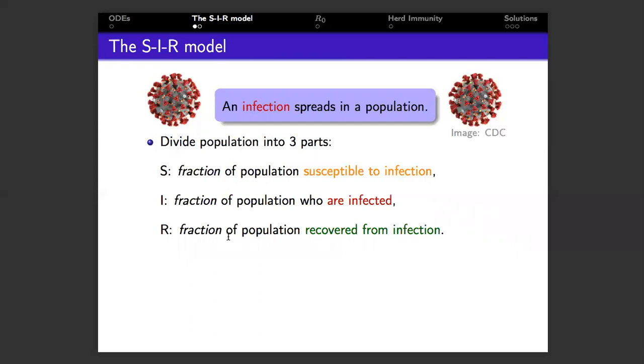Now every member of the population is in either S or I or R. We also assume that once recovered, people have developed immunity and cannot be reinfected.